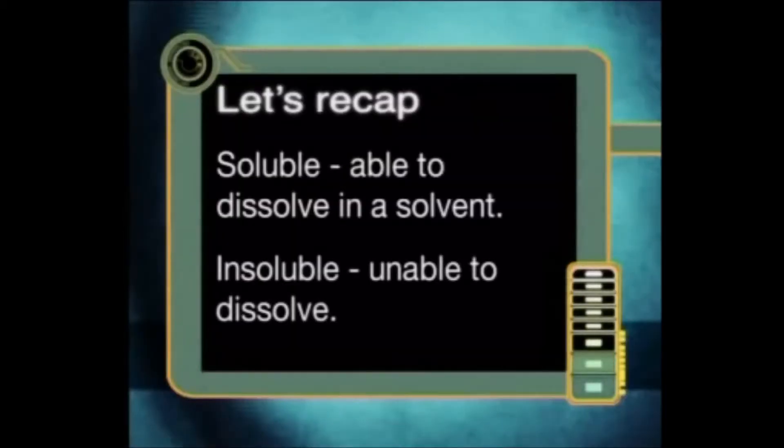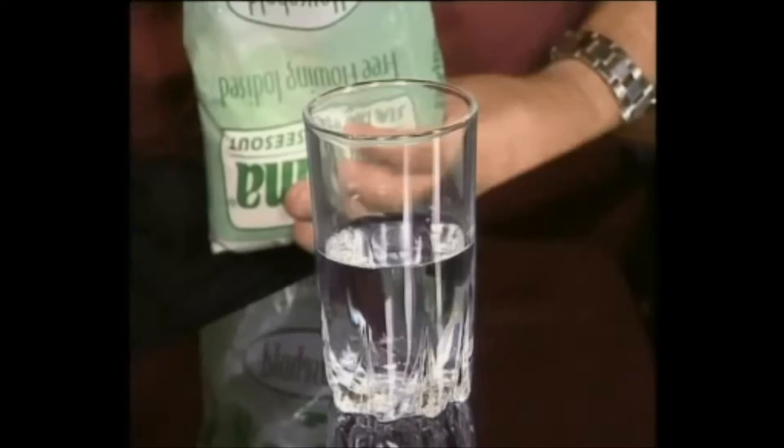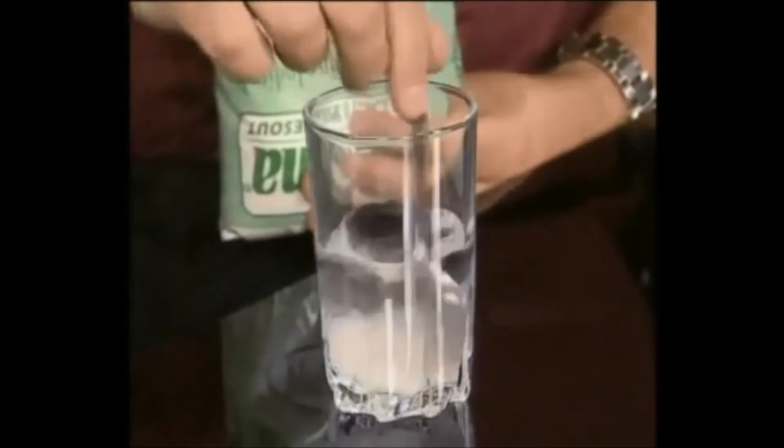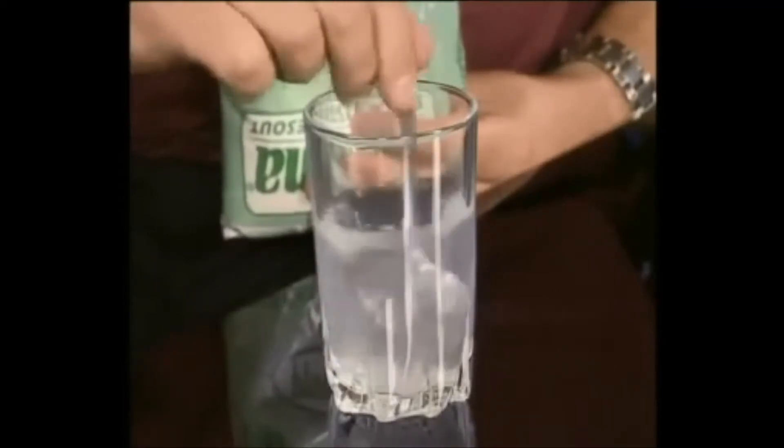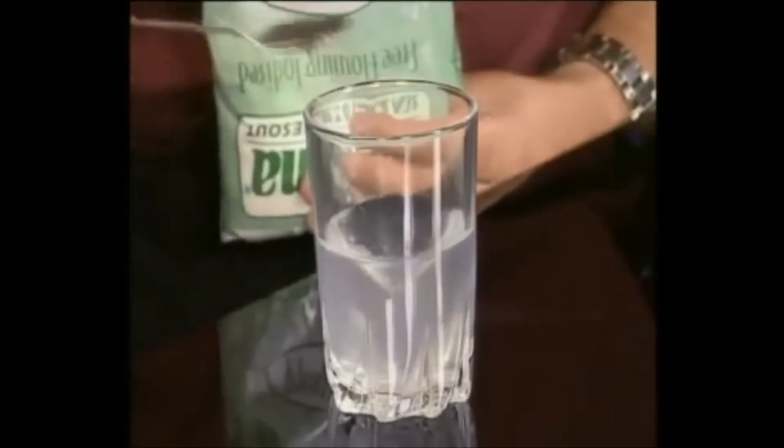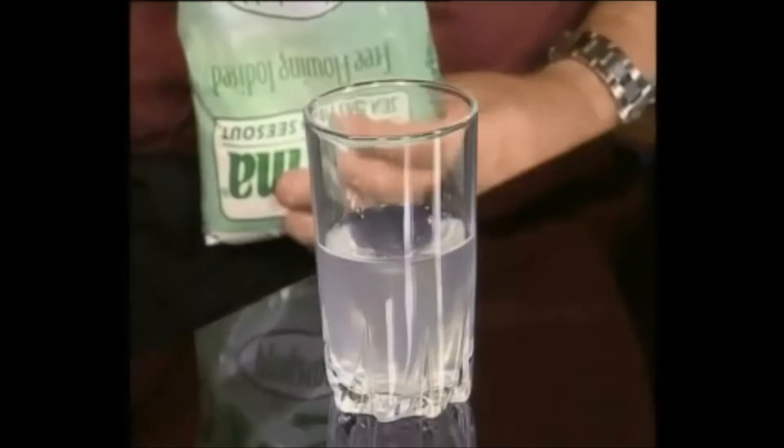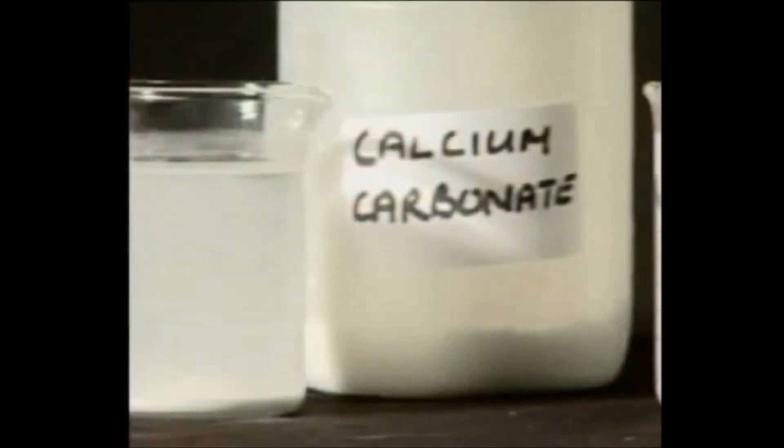A substance is soluble if it is able to dissolve in a solvent and insoluble if it is unable to dissolve. When sodium chloride is added to water, the solute dissolves in the solvent to form a solution. Sodium chloride is soluble in water. When calcium carbonate is added to water, it does not dissolve. Therefore, calcium carbonate is insoluble.